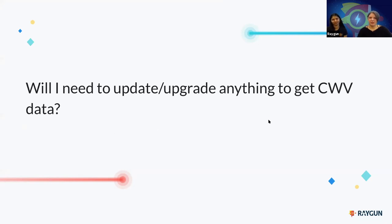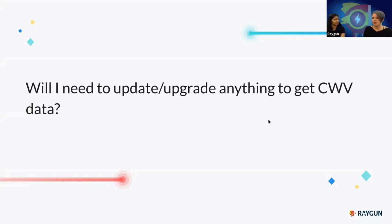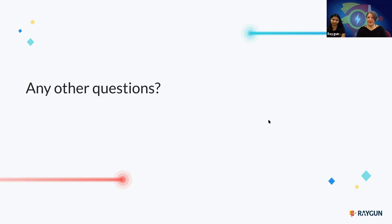Will I need to update or upgrade anything to get Core Web Vitals data? It's in there now. The affected users drill-down is coming very soon. Everything else is currently in real user monitoring. If you sign up now you'll get it immediately. You need to collect a little bit of data to get the historic view, but that will start automatically when you set up RUM. If you're an existing customer, make sure you've got real user monitoring set up and have the latest version of the Raygun4.js provider. It's only a few code snippets — really easy to plug in, but it will take some time to collect data if you haven't used the RUM product before.